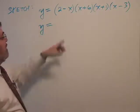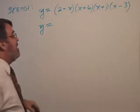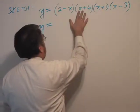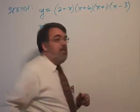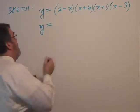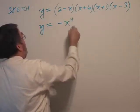Here it gets a little tricky because the 2 minus x means that I would have a negative x times x times x. So negative x, x, x, x would be minus x to the 4th. That means our leading coefficient is negative.